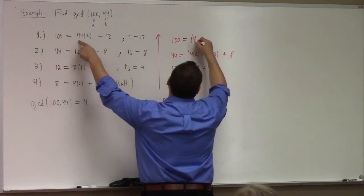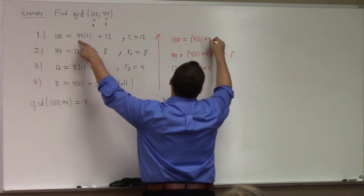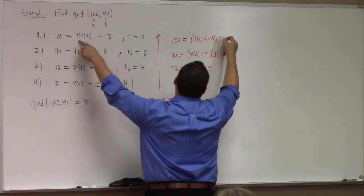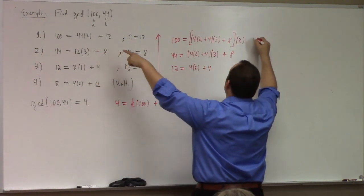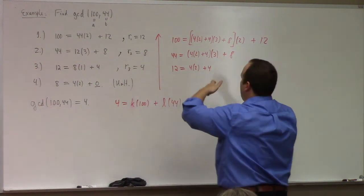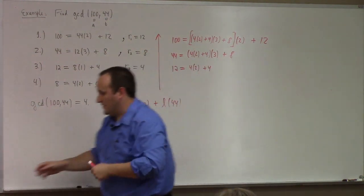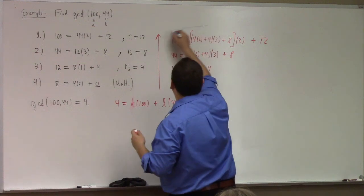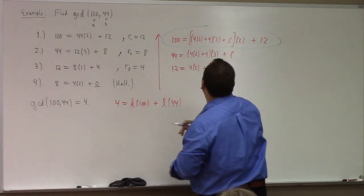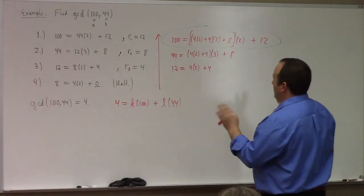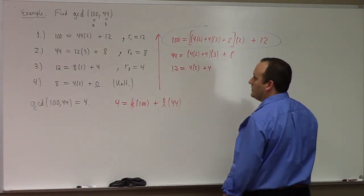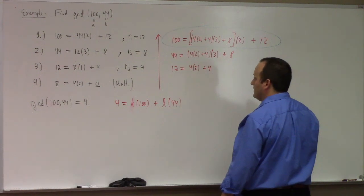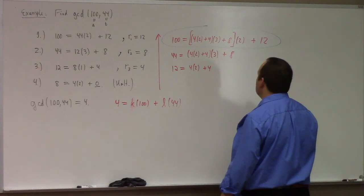So 100 equals 4 times 2 times 3... I need to actually look at my notes. You start with 4 equals 12 minus 8 times 1, go back and substitute in the 8. Let's try this again — I showed you how not to do it.